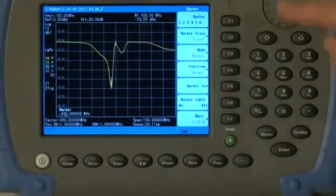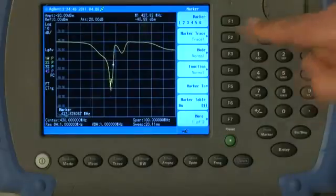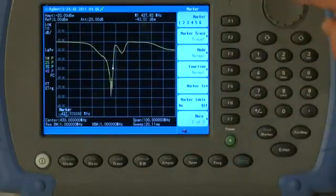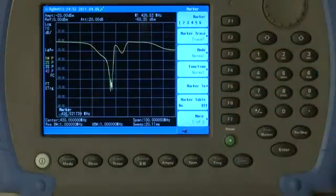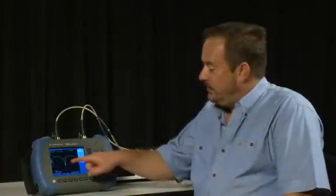And if I press the marker button and turn the knob, we can move marker 1 here down to the notch of the filter and see approximately what frequency that notch is. Now you will see there is quite a bit of noise at the bottom of the notch there. So let us see what steps we can take to improve the sensitivity, and hence the dynamic range of the measurement.